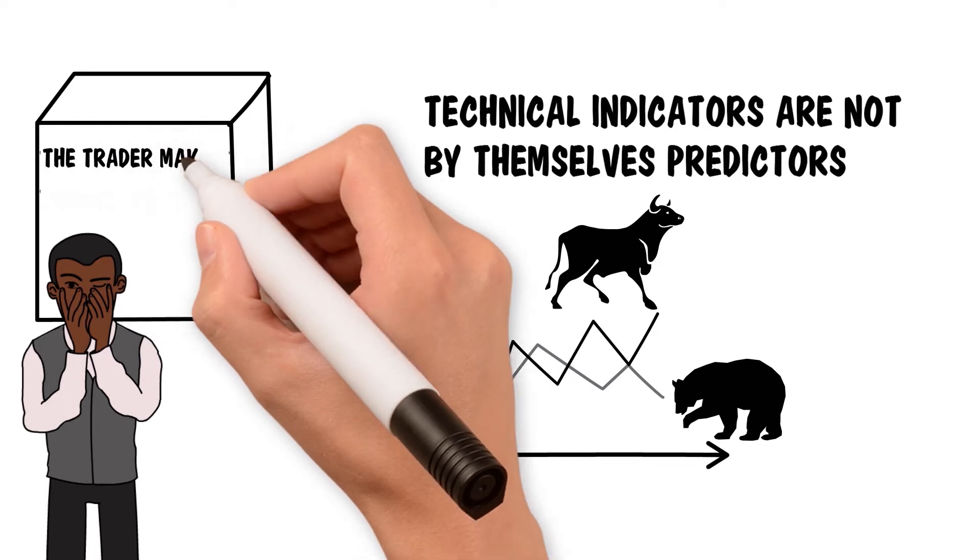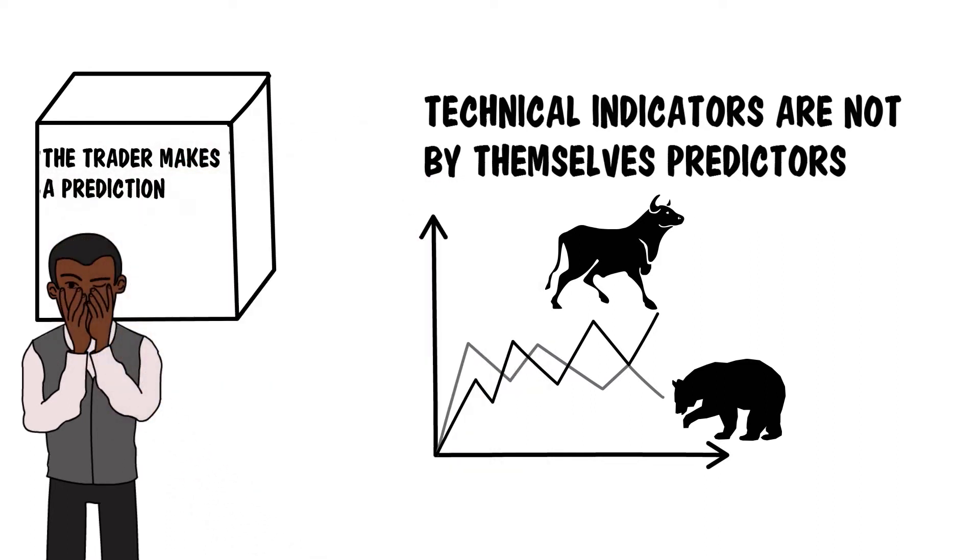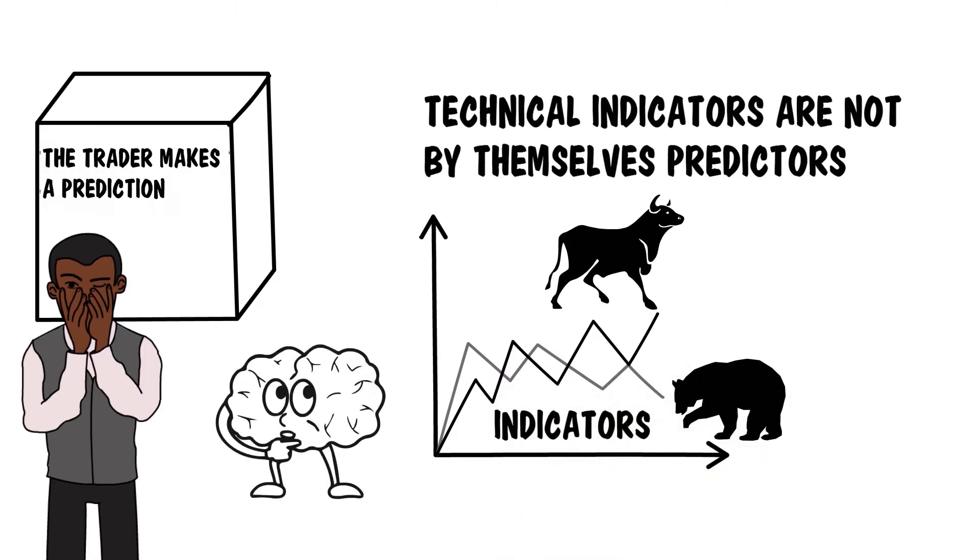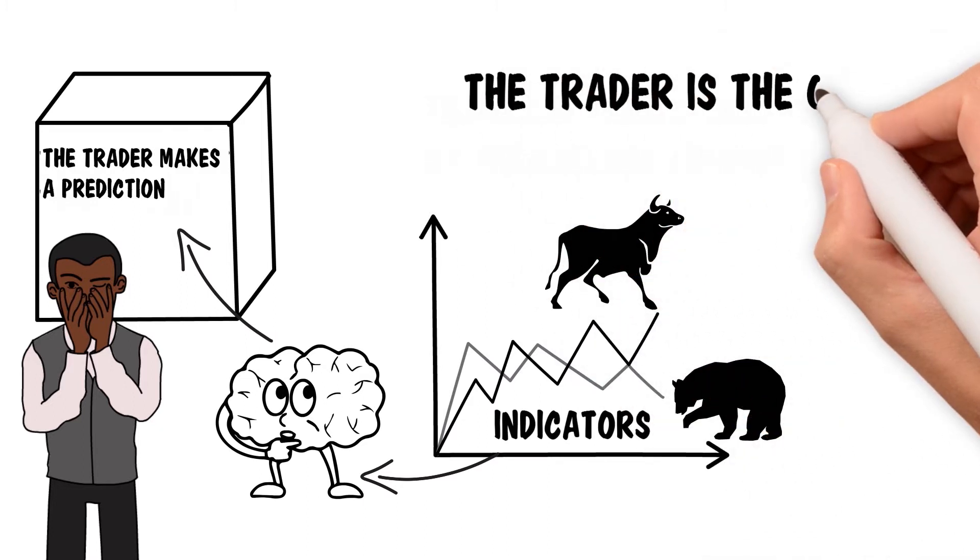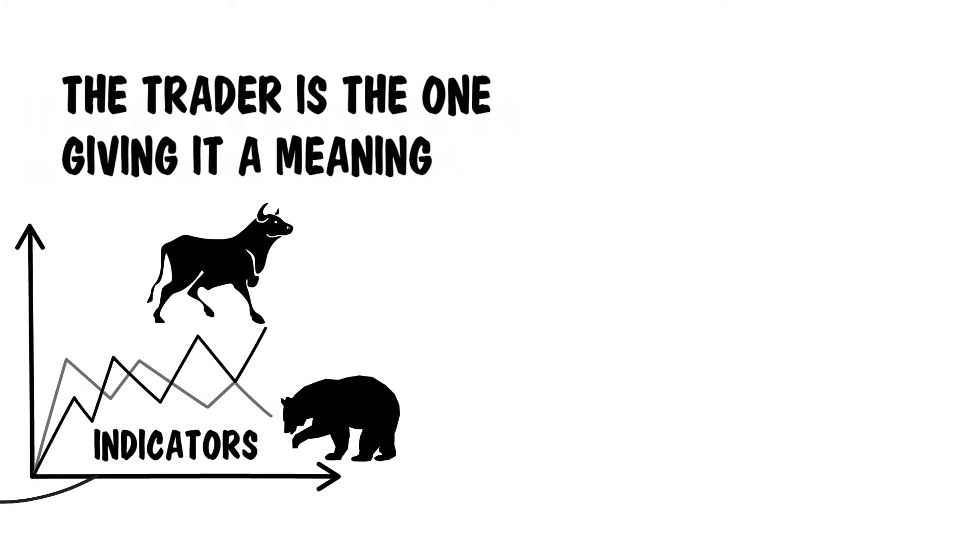The indicator cannot and will not predict the future of the market. The trader does. He or she uses the indicator, but the prediction of the movement is actually done through cognitive and emotional processes in the trader's mind. By itself, a technical indicator is meaningless. The trader is the one giving it a meaning.